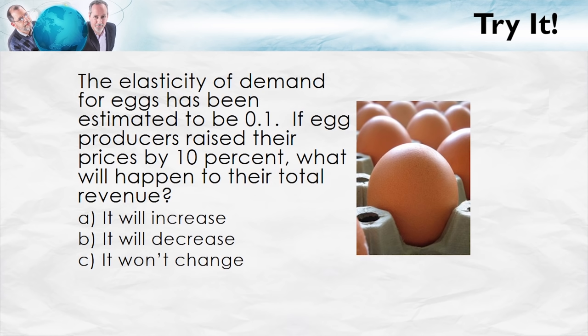Here's a quick practice question. The elasticity of demand for eggs has been estimated to be 0.1. If egg producers raise their prices by 10%, what will happen to their total revenues — increase, decrease, or won't change? If the elasticity of demand is 0.1, that's an inelastic demand curve. With an inelastic demand curve, when price goes up, revenue goes up as well. So the answer is revenue increases.